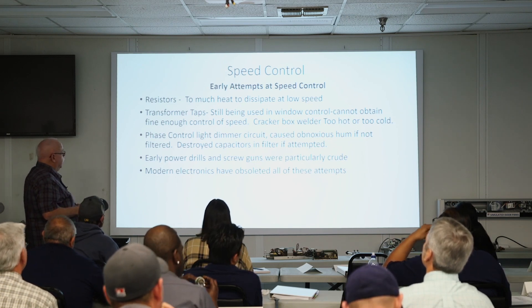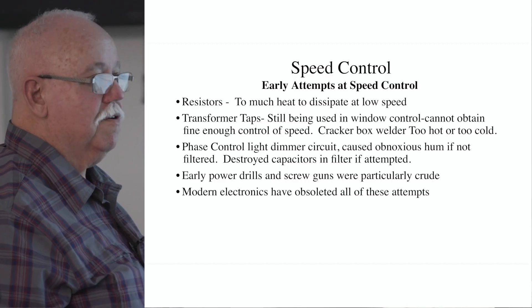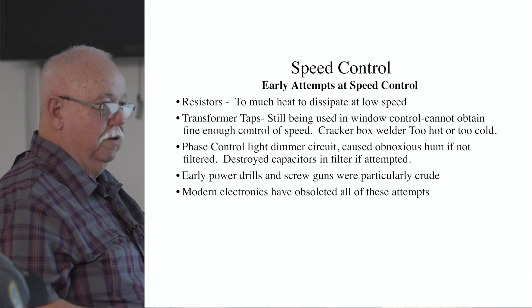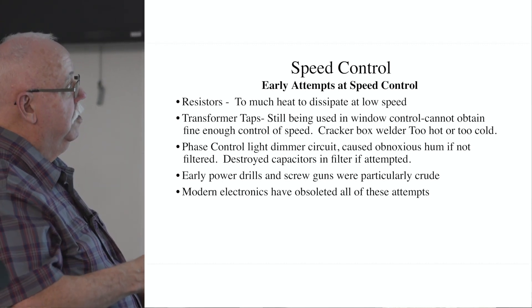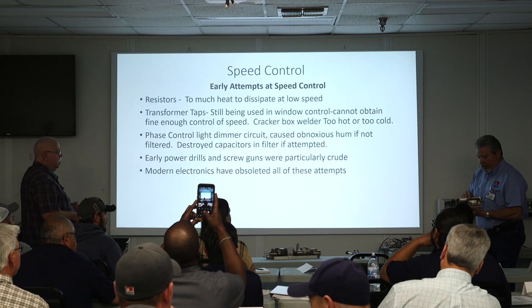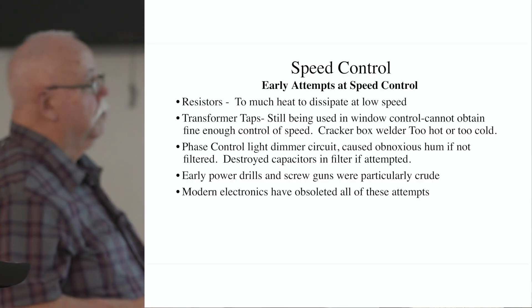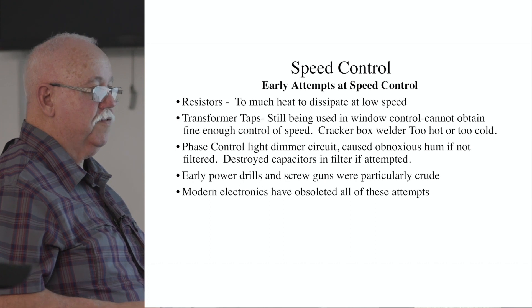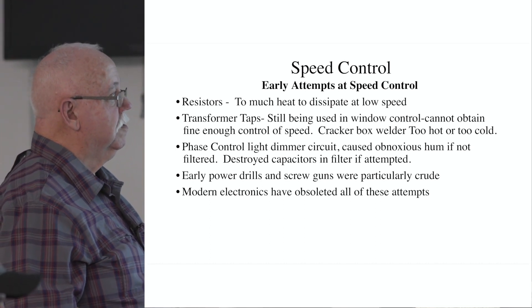These are the early attempts at speed control. We tried resistors — if you do that you've got to have such a high wattage you could cook hot dogs on it at lower speeds. We tried transformer taps used in the window control. The resistor we used to use in the old days would heat up and fail. The window control had transformer taps: you went from 15 to 30 to 45 to 60 — it was always either too fast or too slow.